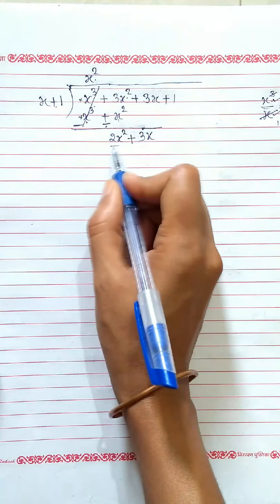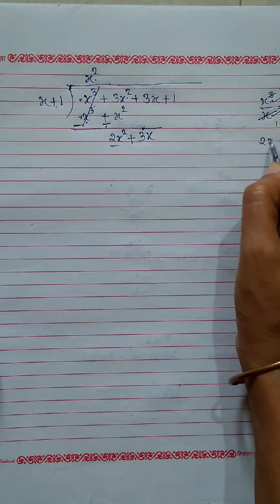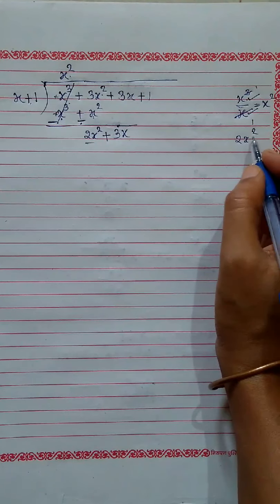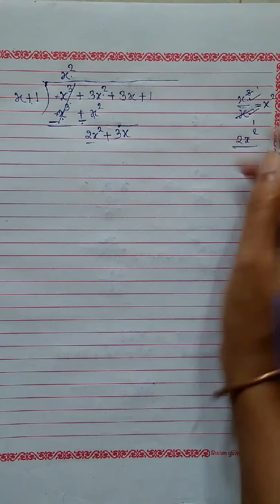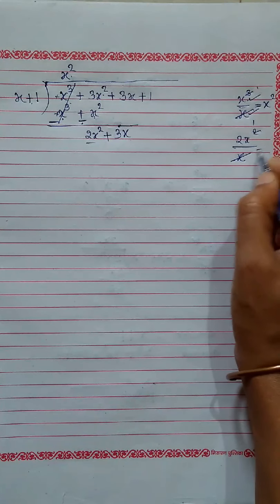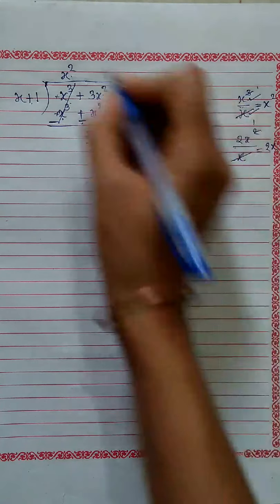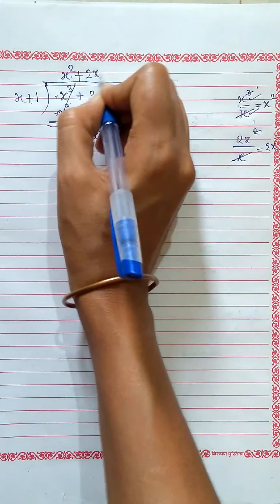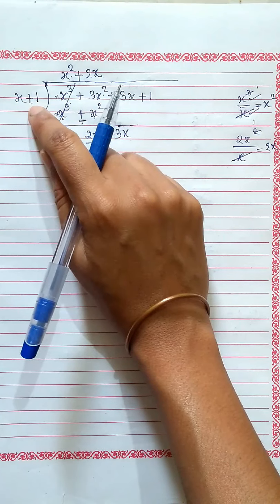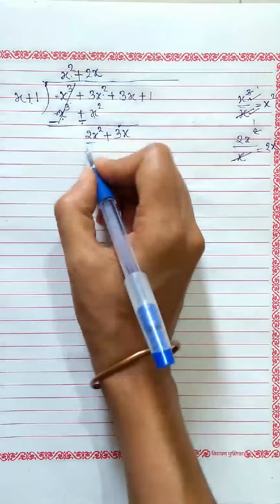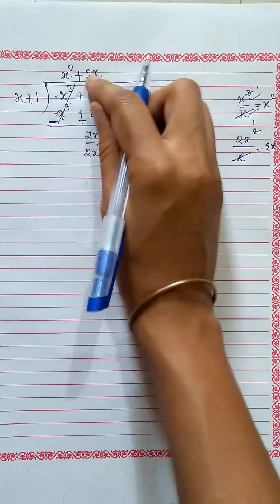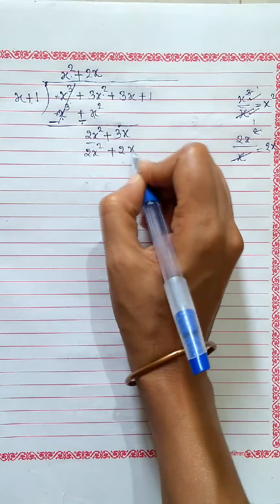Here the first term of the new dividend is 2x squared, and the first term of the divisor is x. So 2x squared divided by x gives 2x, so we write plus 2x. Multiply 2x by x plus 1: 2x times x gives 2x squared, plus 2x times 1 gives 2x.